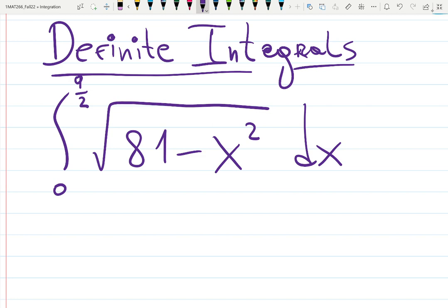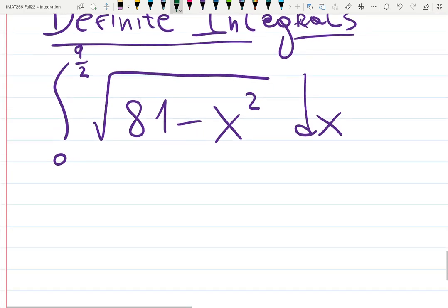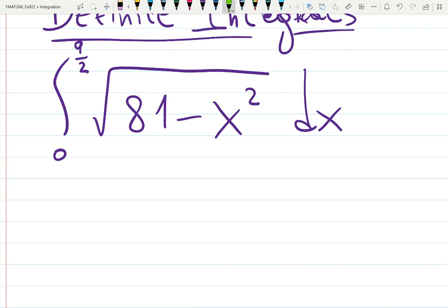So we first choose the substitution from the table, or maybe you already remembered this shape. The form of this integral is 9² - x², right? That gives us the idea what to use as substitution.